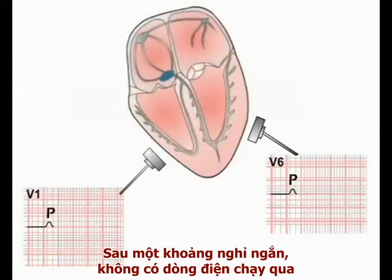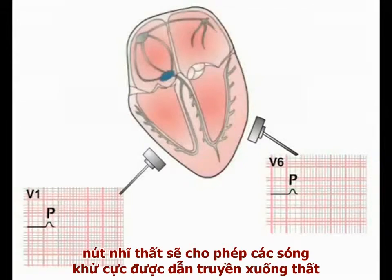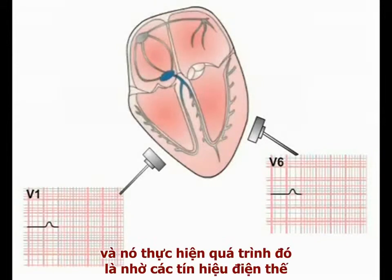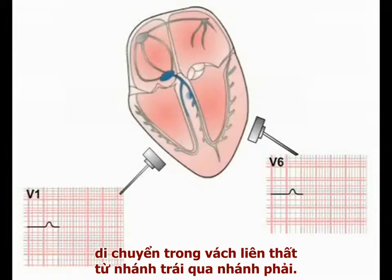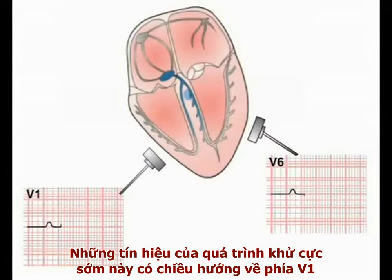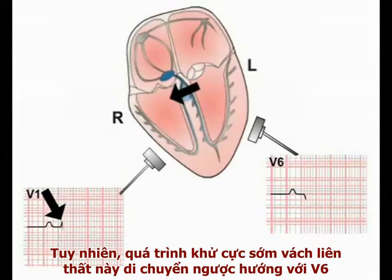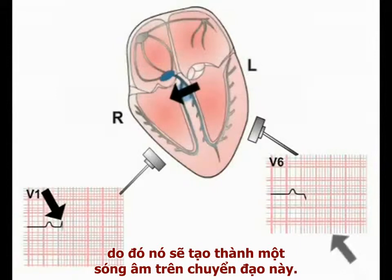After a short delay in which no current is flowing, the AV node allows the depolarization signal to travel into the ventricles. The mid-zone of the intraventricular septum is the first piece of ventricular muscle to depolarize, and it does so by signals spreading across the septum from the left towards the right bundle branch. This early depolarization signal is moving towards V1 and therefore produces a positive deflection on the ECG paper in the recording from this lead. However, this septal current is moving away from lead V6, producing an initial negative deflection in this lead.